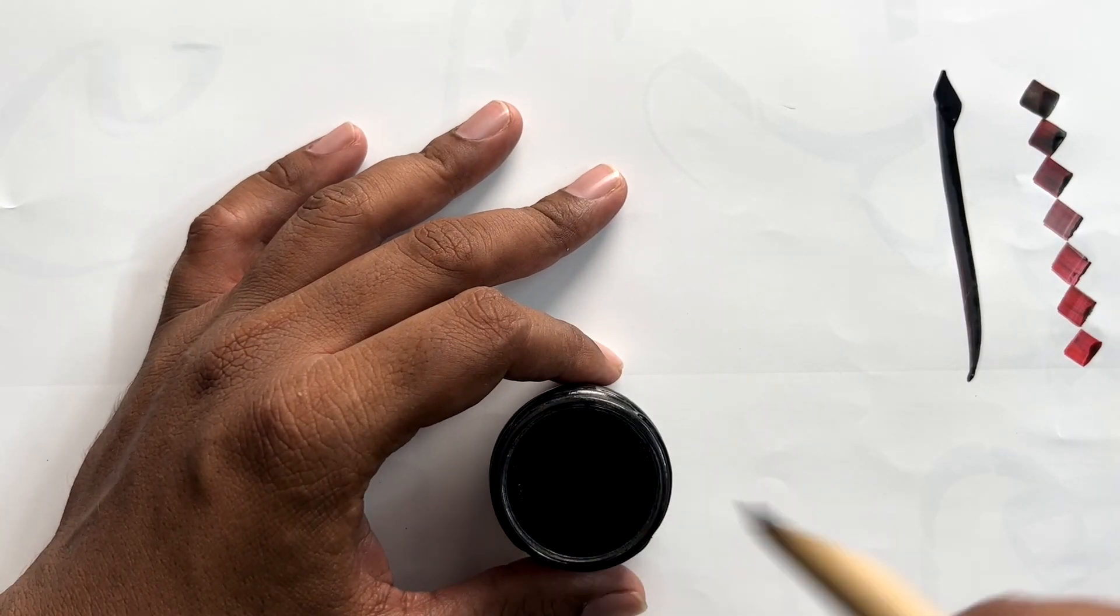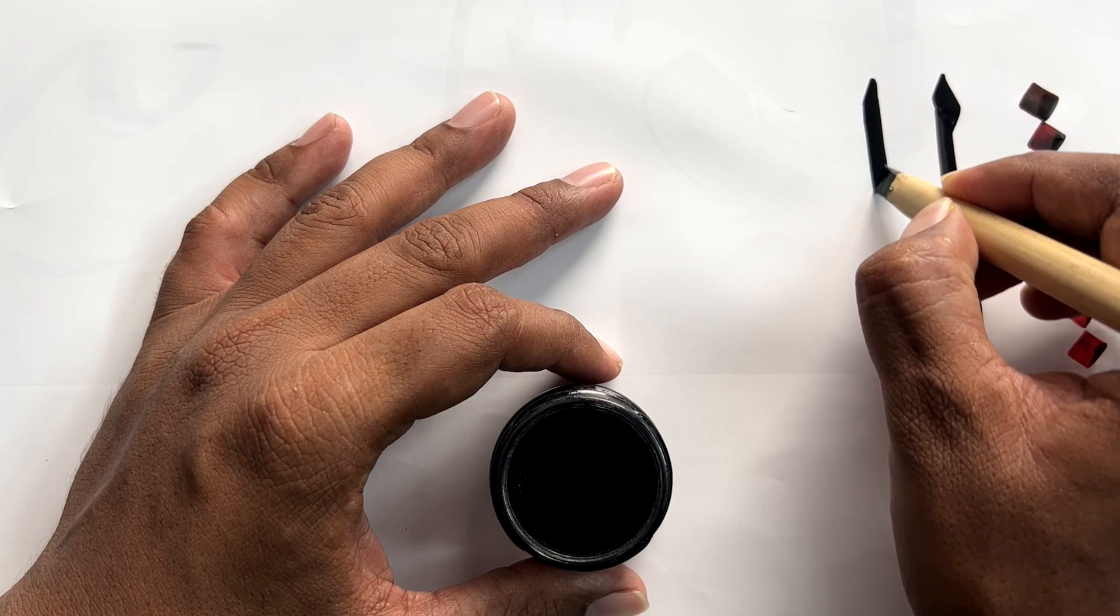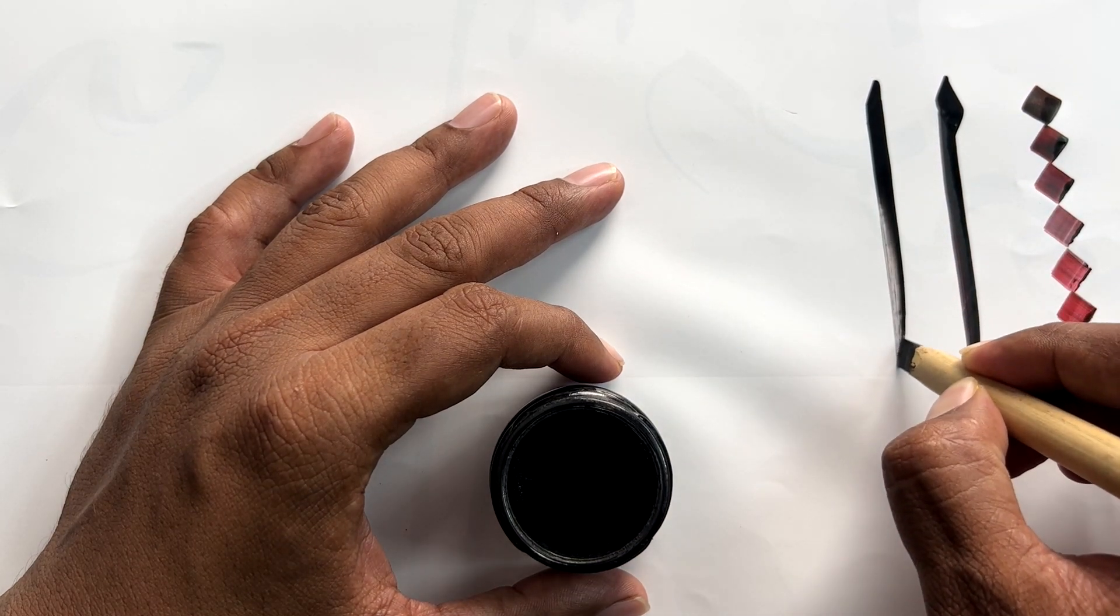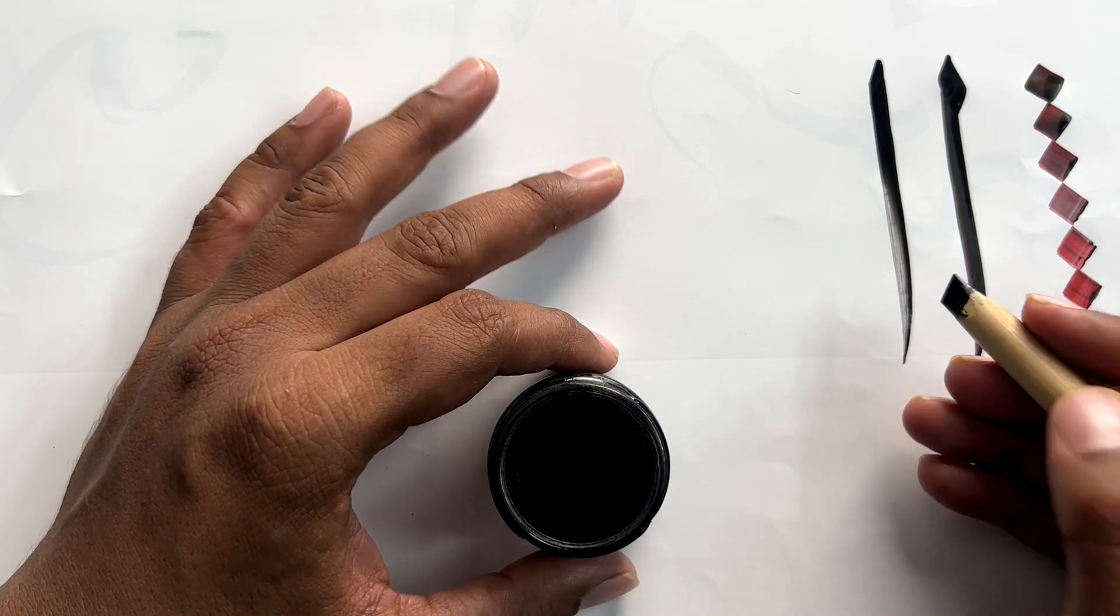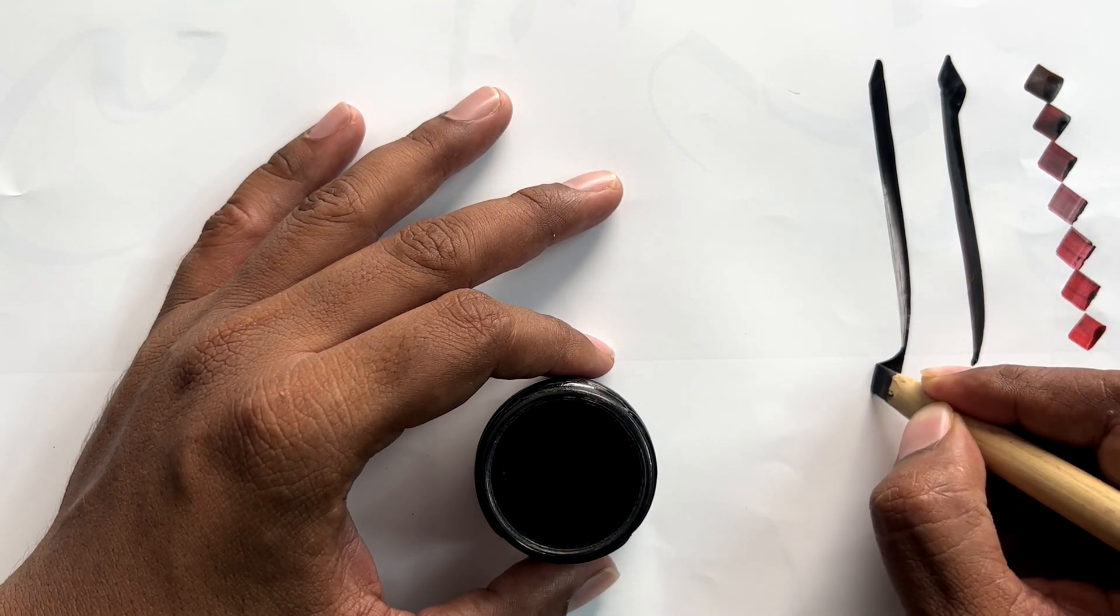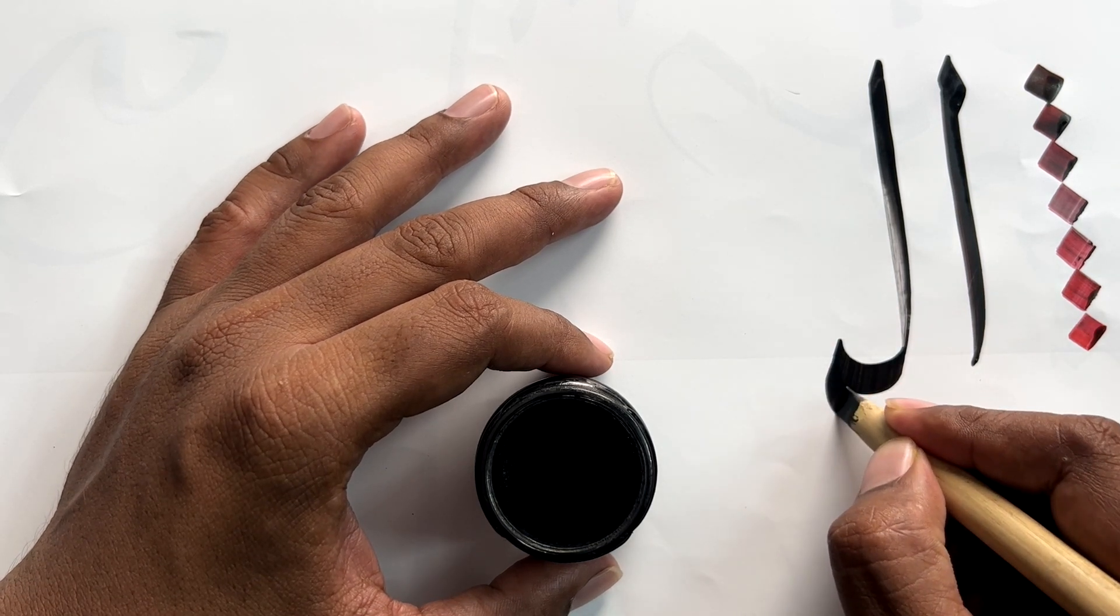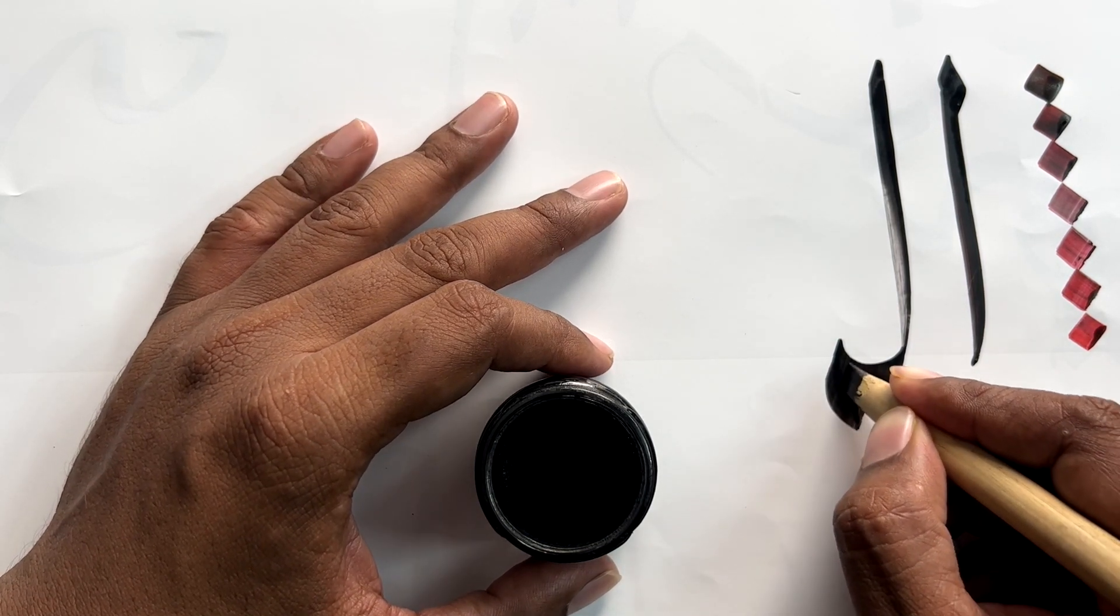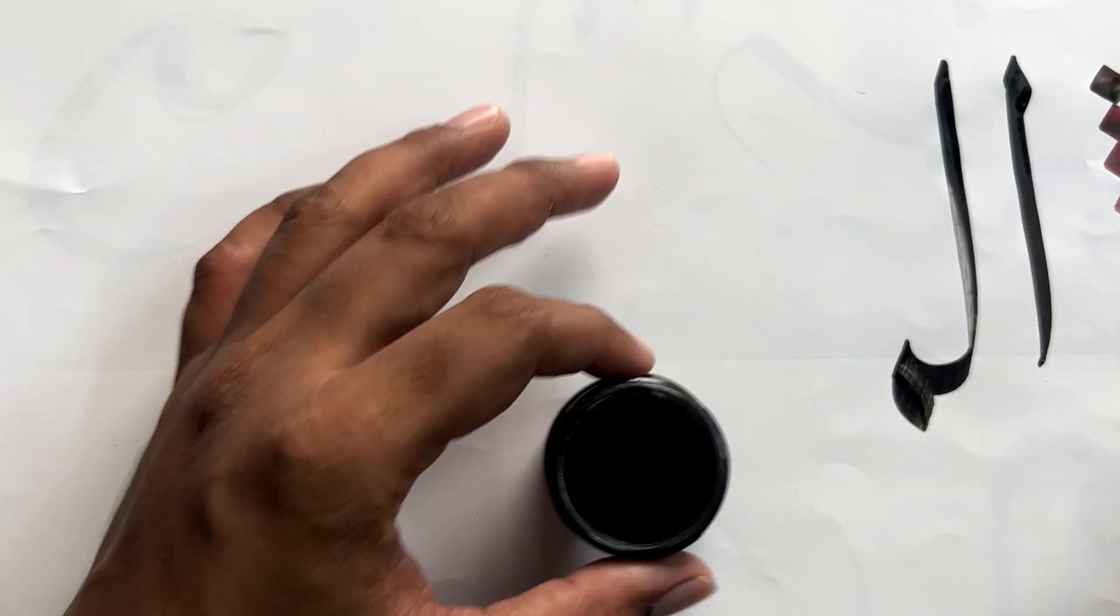That's the hilya. Now I'll make lam, which will connect with meem. Lam is nothing but alif, but it connects. I will connect it to this form of meem. This is the middle shape of the letter meem, which is covered in the advanced course.